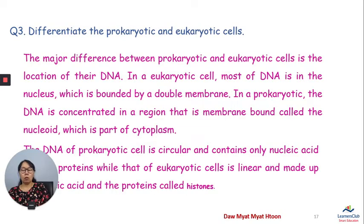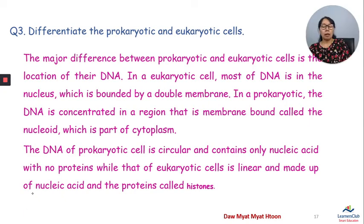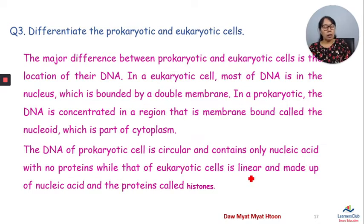The eukaryotic cells have linear DNA associated with protein. The DNA is organized as linear chromosomes associated with proteins called histones.